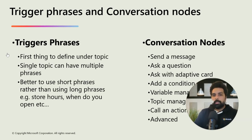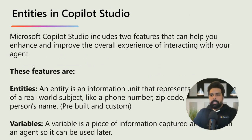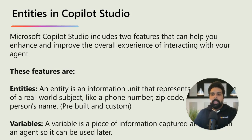By now you understand the importance of the topic and its attributes and elements. Now today we will be talking about entities in Copilot Studio. Agents' conversations use natural language understanding to identify a user's intent based on what they input in the conversation window. For example, if a user enters 'I tried to use my gift card but it didn't work,' the natural language understanding helps identify and route to the topic related to the gift card not working — even if that exact phrase isn't listed in a trigger phrase.